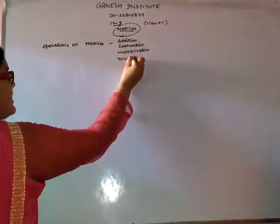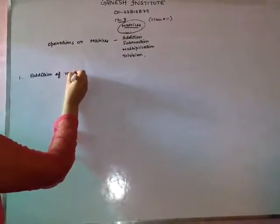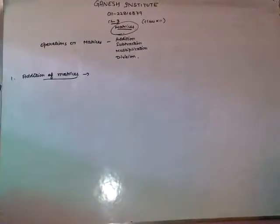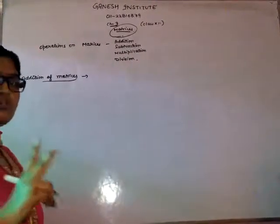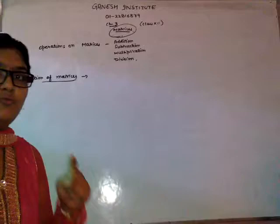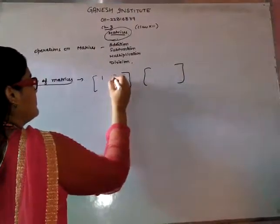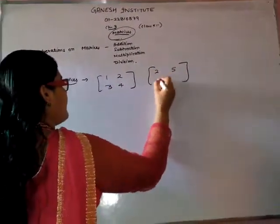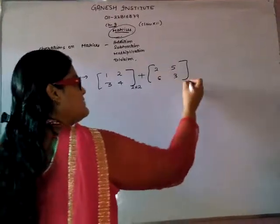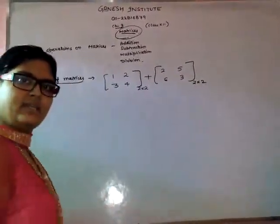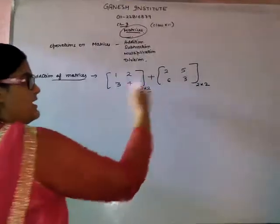Firstly, we are discussing addition of matrices. To add two matrices, you have to make sure that addition can be operated on those two matrices whose order must be the same. If we have to add these two matrices, the order of this matrix is 2 by 2. The order of this matrix is 2 by 2. Number of rows is 2 here and number of columns also 2 here.